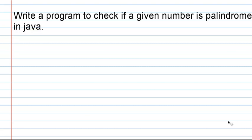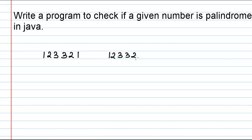Write a program to check if a given number is palindrome in Java. Let us consider a number 1 2 3 3 2 1. If this number is reversed we will get the same number, 1 2 3 3 2 1. So even after reversing, if we get the same number, that number is referred to as a palindrome number. Now we have to write a program in Java for checking if a given number is palindrome.